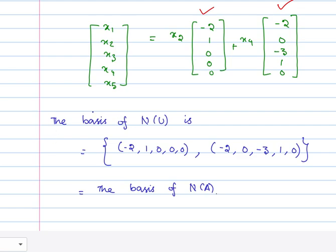So both are the same — the basis of the null space of U equals the basis of the null space of A. I also want to emphasize that the solution set can be described by solving the reduced system only. We do not need to solve the original system; simply reduce it and then solve.